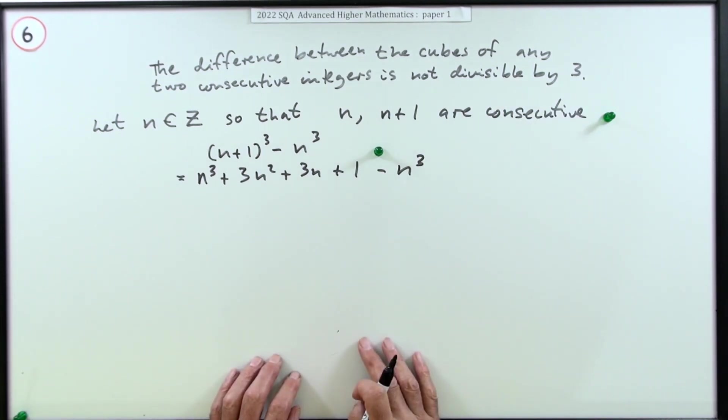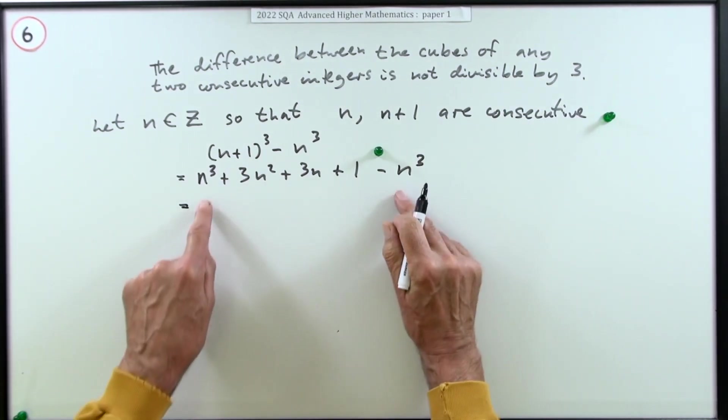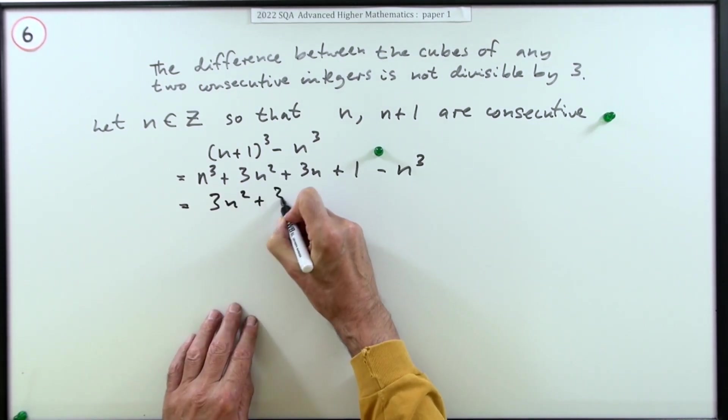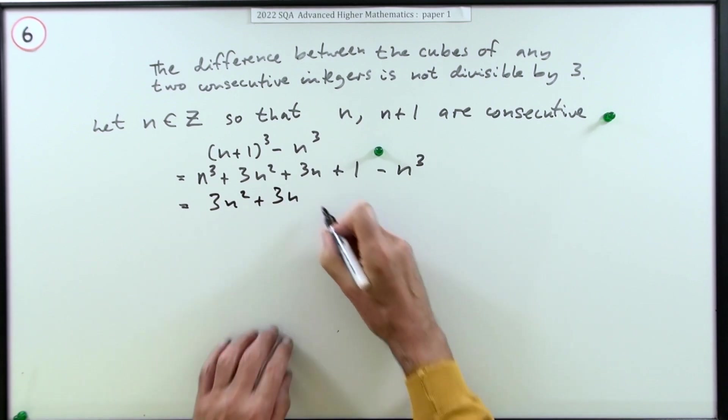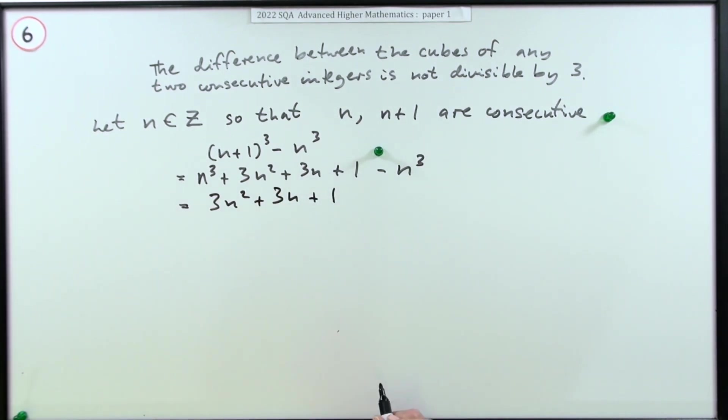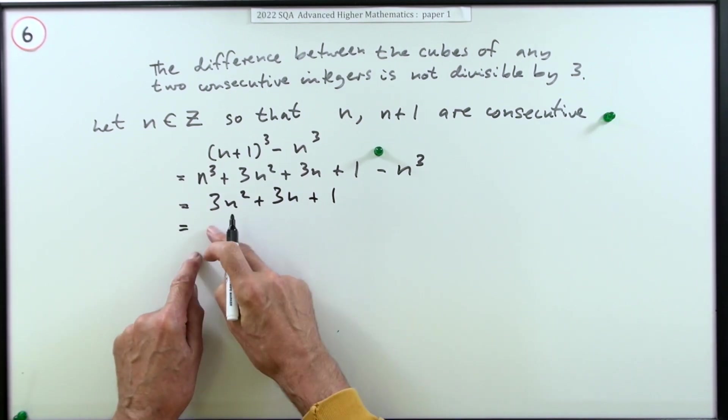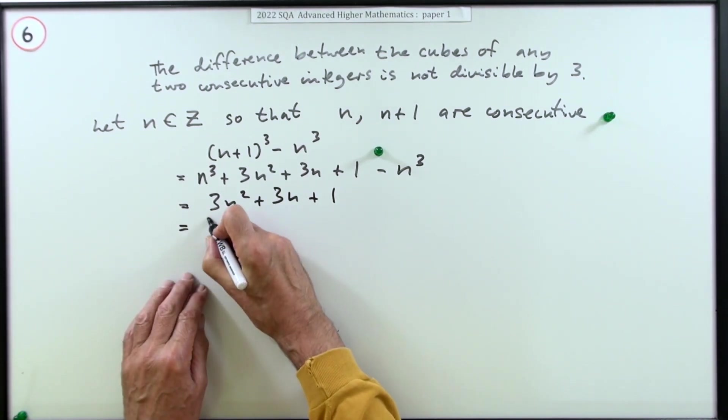Those get knocked out. You're left with three n squared, which is divisible by three, plus three n, which is divisible by three, plus one which isn't, which means it's not. But you wouldn't just say that. You would clearly take out a common factor of three, so three lots of n squared plus n.